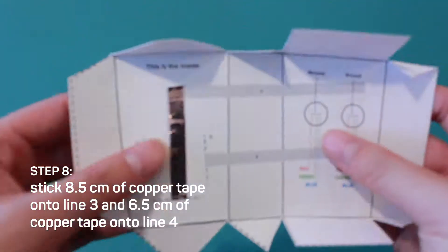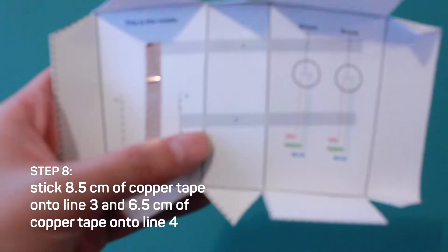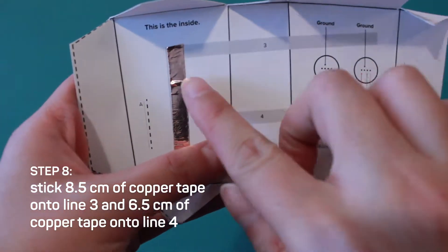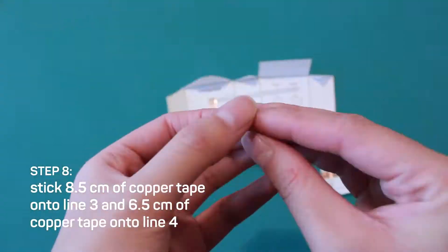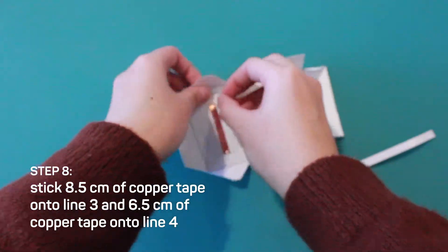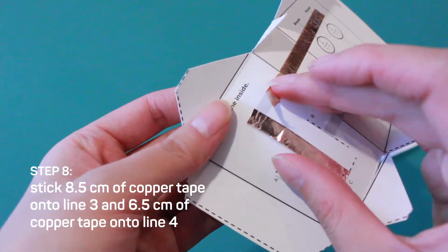Step eight, stick two more pieces of copper tape onto line three and four. Make sure the copper tape on line two and three overlap to continue the circuit.